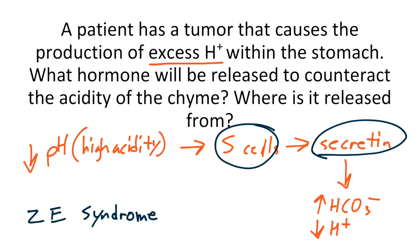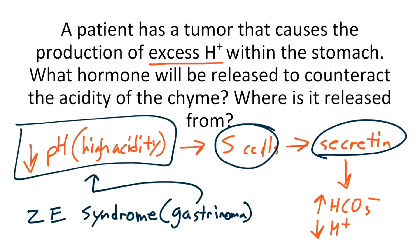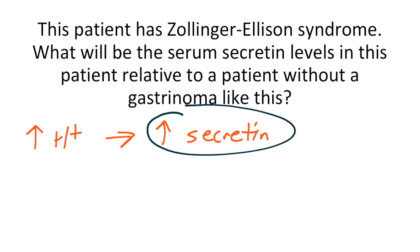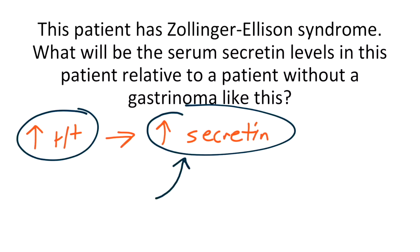This scenario with a tumor creating excess acid is actually called Zollinger-Ellison syndrome — a gastrinoma that causes excess gastrin to be produced, stimulating the parietal cells to secrete more acid. All of the acid from the parietal cells will cause hypersecretion from the S cells — increased acid leads to increased secretin secretion. So a patient with Zollinger-Ellison syndrome will have higher levels of serum secretin than a healthy patient. In fact, this elevated secretin is actually a good diagnostic tool when working up the patient.